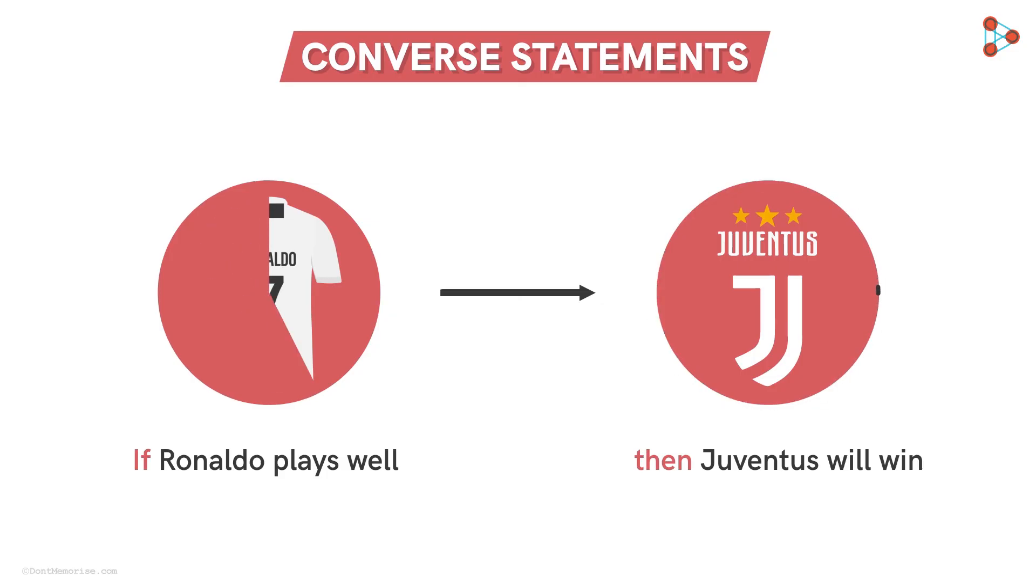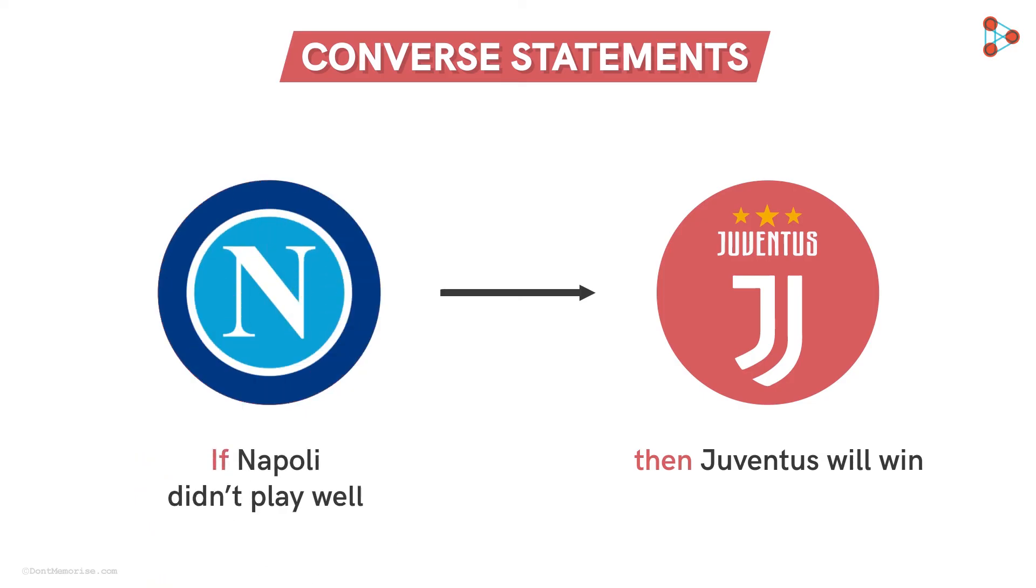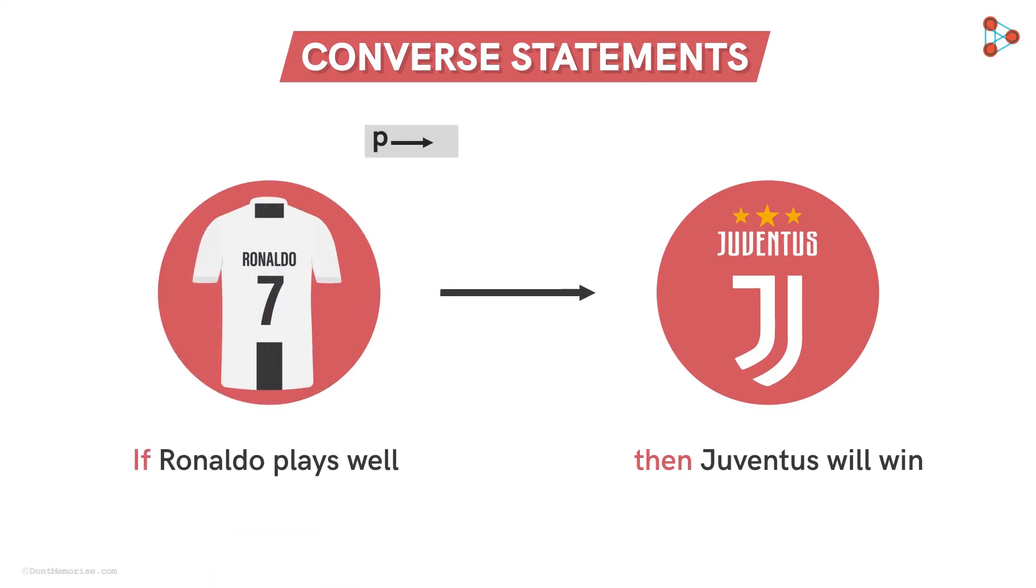Juventus may also win because of the other players performing well, or the opponents not playing well, or some other reason, even though Ronaldo may not play well. So again we see that for the statement P implies Q, we cannot say that Q also implies P. That is, the converse need not be true.